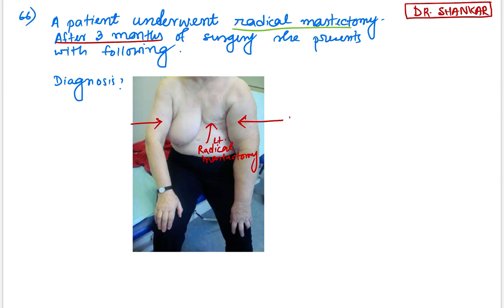So this is nothing but post-mastectomy lymphedema. So this is post-mastectomy left upper limb lymphedema. In chronic cases it may progress to lymphangiosarcoma. In that case the color of the hand will be changed, Stewart-Treves syndrome. But this case, just after three months, just presents with the swelling. This is a case of post-mastectomy lymphedema. So the answer is lymphedema.